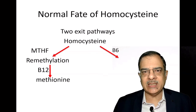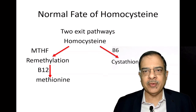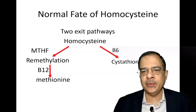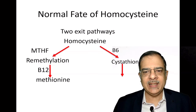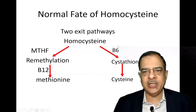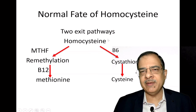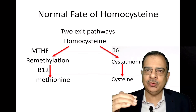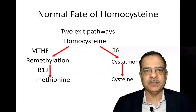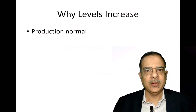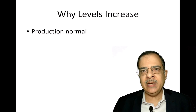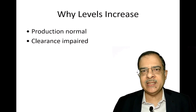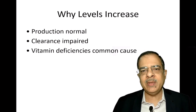The other pathway uses pyridoxine, that is vitamin B6. B6 helps in the conversion of homocysteine into cystathionine and then to cystine. If B6 deficiency is present, the homocysteine level will be elevated. So three vitamin deficiencies lead to the elevation of homocysteine. The level increases mainly because production is normal but clearance is impaired.